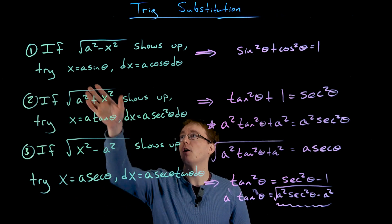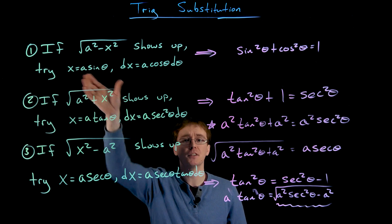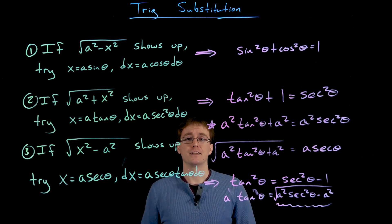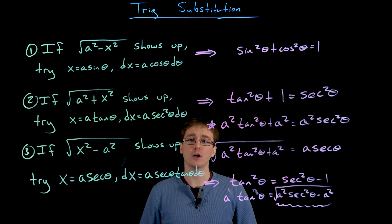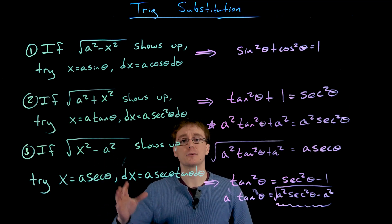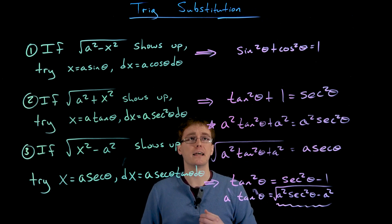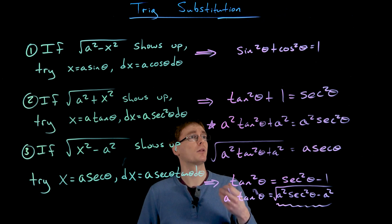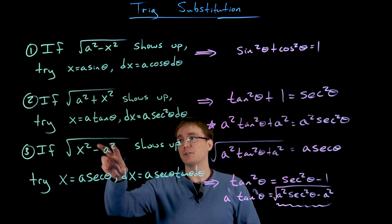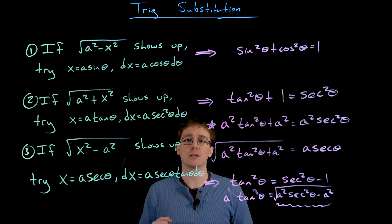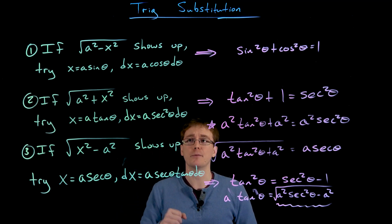As mentioned earlier, for the sine substitution we technically could have done a cosine substitution, but we'd have to work with a negative sine in the differential — that's why we prefer sine over cosine to avoid sign errors. The same applies to the last two substitutions. There's a third Pythagorean identity — cotangent squared plus one equals cosecant squared — which would allow cotangent and cosecant substitutions, but those are equivalent to our tangent and secant substitutions and introduce pesky negative signs in the differentials that we'd rather avoid.